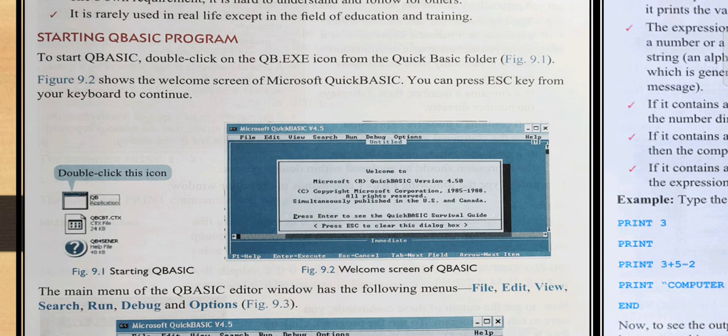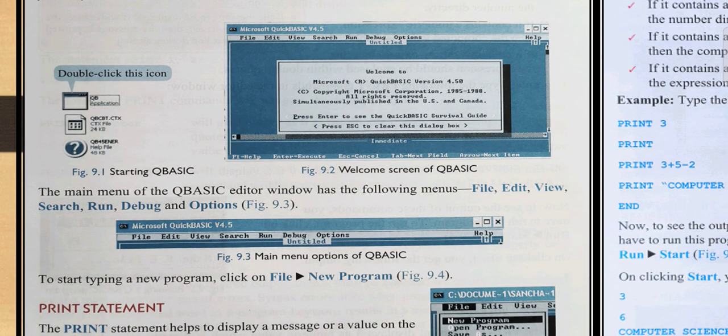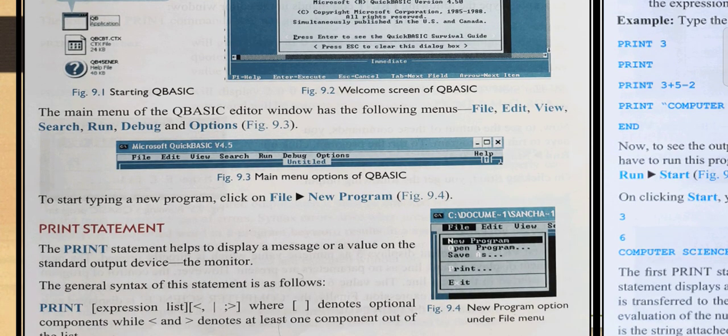It will show you the main menu of the QBASIC editor which has the following menus: File, Edit, View, Search, Run, Debug, and Options. You can see the main menu of the QBASIC editor. To start typing a new program, click on File then New Program. When you want to write any new program, you will go to the File menu and then select New Program. You can see here in Figure 9.4.